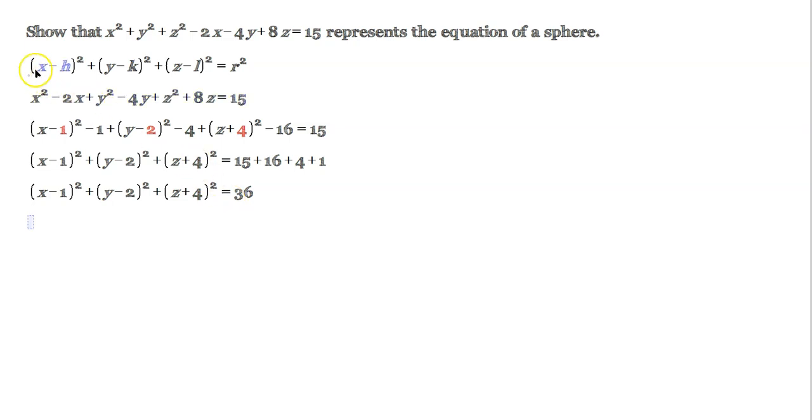Notice something, friends. Our formula right here, this formula. Every single thing that you see there has a minus. It's x minus h squared plus y minus k squared plus z minus l squared equals r squared. We need that form. We don't have that form. We have to do one more step.